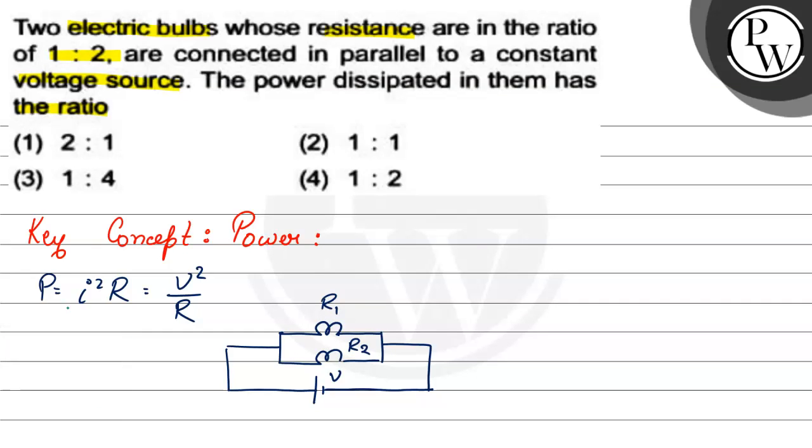So, which formula for power will we use? Since they are connected across a constant voltage source and the voltage across both the bulbs is V, then we will use the formula V square by R. So, we have P1 will be V square by R1 and P2 will be equals to V square by R2.